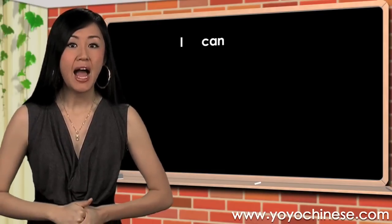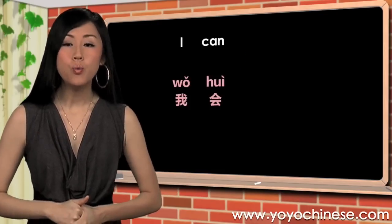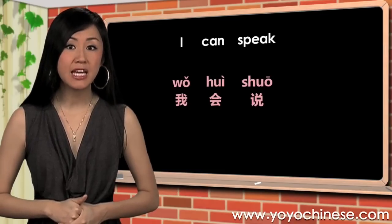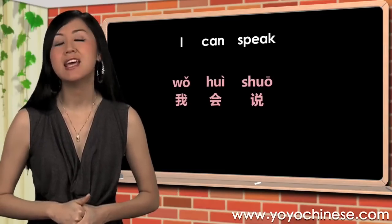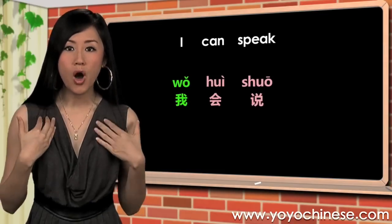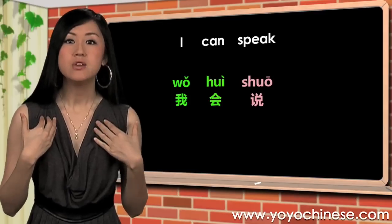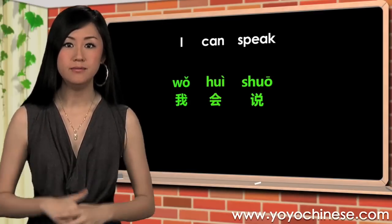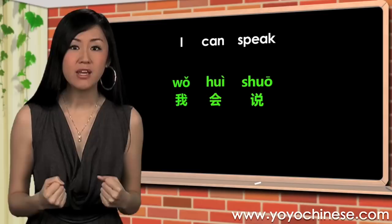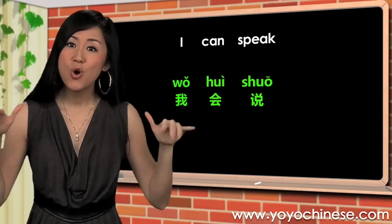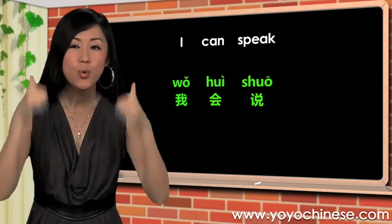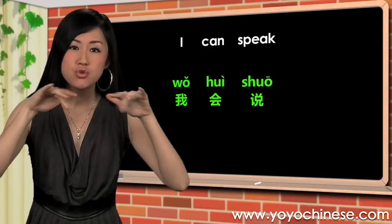Now let's put 'I can' (我会) and 'speak' (说, shuo) together and say 'I can speak': 我会说, 我会说, 我会说.